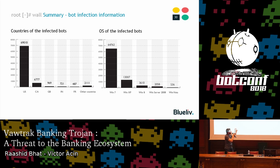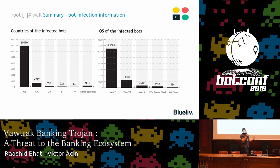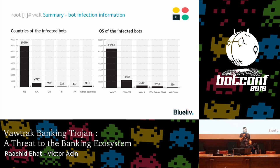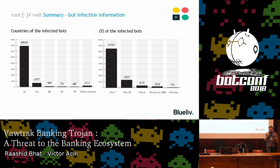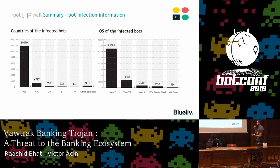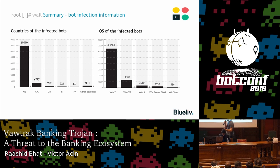These graphs show infections by operating system and by country. The US is the most affected country, significantly more so than others. Regarding operating systems, Windows 7 — being the most used — is obviously the most affected. Notably, we detected about 2,000 infections on Windows servers. Since this malware is distributed via email campaigns, that means either someone at home is using a Windows server to open their mail, or we have system administrators using company servers to browse their email.